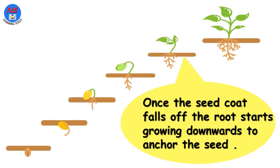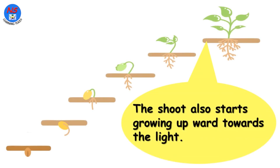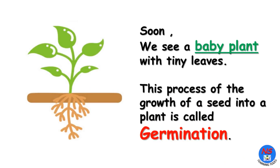Once the seed coat falls off, the roots start growing downwards to anchor the seed. The shoot also starts growing upward towards the light. Soon we see a baby plant with tiny leaves. This process of growth of a seed into a plant is called germination.